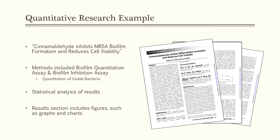Here is an example of a quantitative research article, also from the Clinical Laboratory Science Journal on the ASCLS website. The article is titled "Cinnamaldehyde inhibits MRSA biofilm formation and reduces cell viability." The methods include biofilm quantitation assays and biofilm inhibition assays, basically looking to quantitate viable bacteria. A statistical analysis of the results is provided, and the article contains many figures, graphs, and charts — based on the content and headings, you can clearly identify this as a quantitative research article.